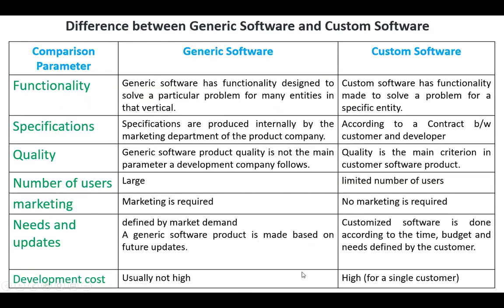Some of these differences relate to functionality. Generic software has functionality designed to solve a particular problem for many entities in a vertical, while custom software has functionality made to solve a problem for a specific entity.